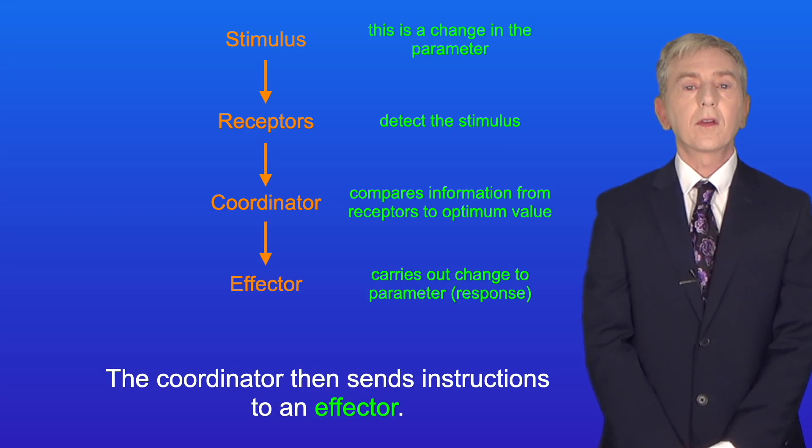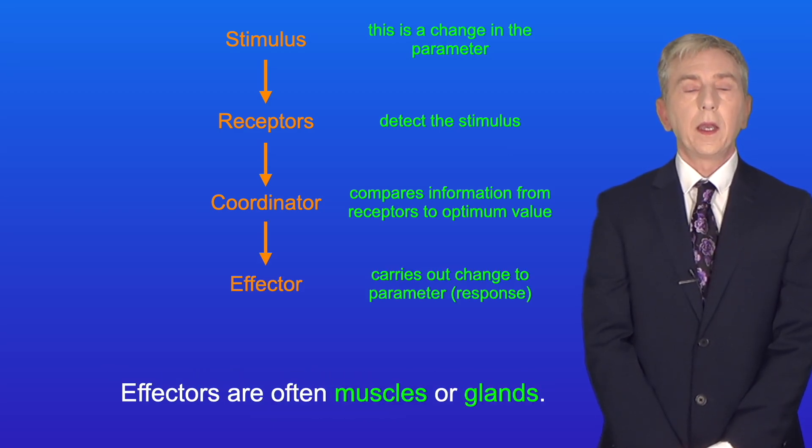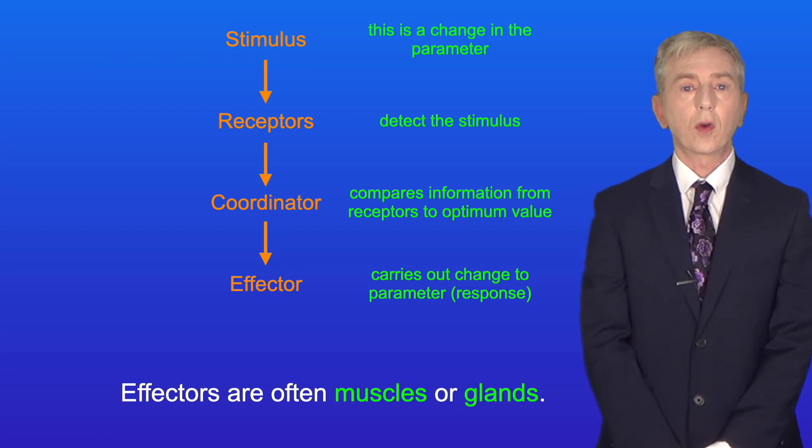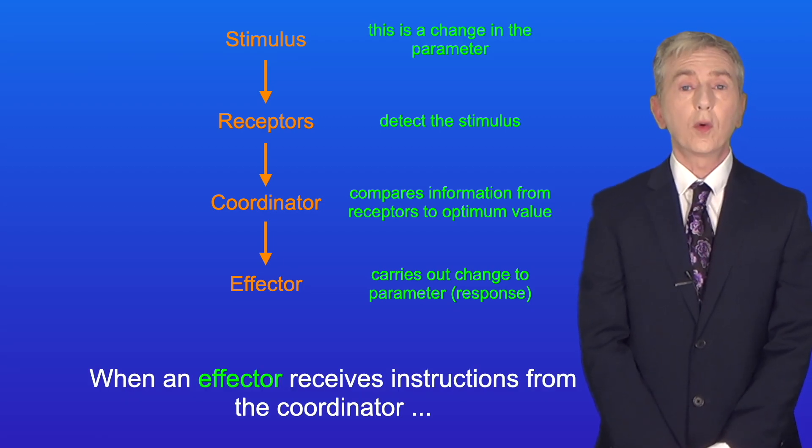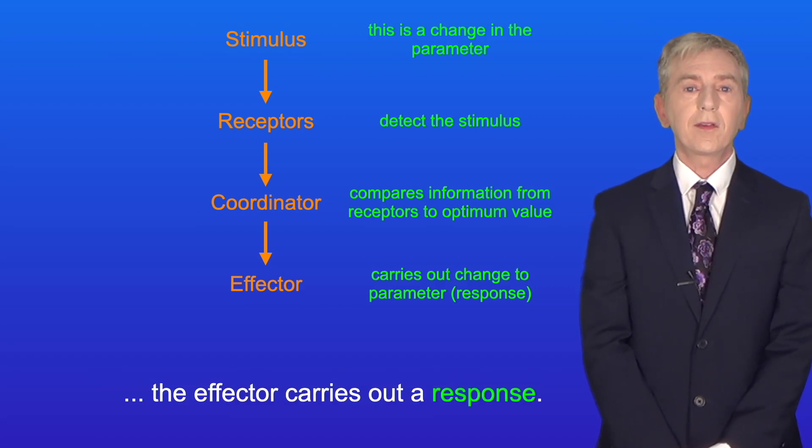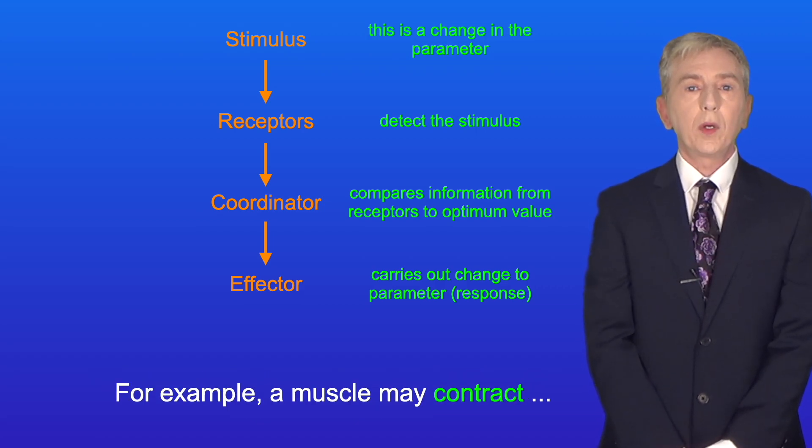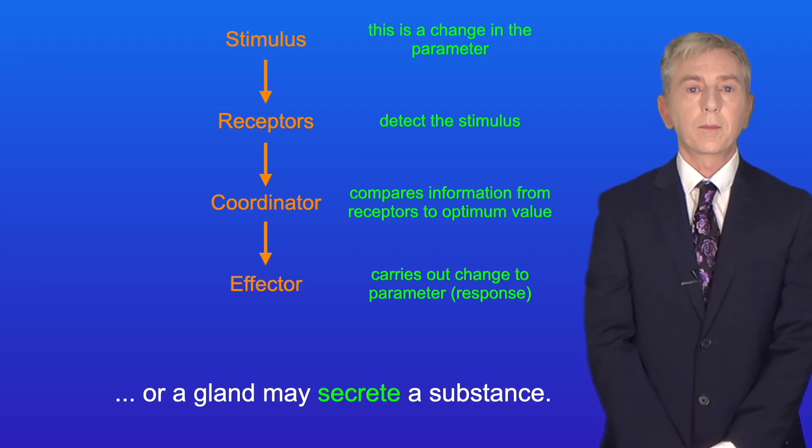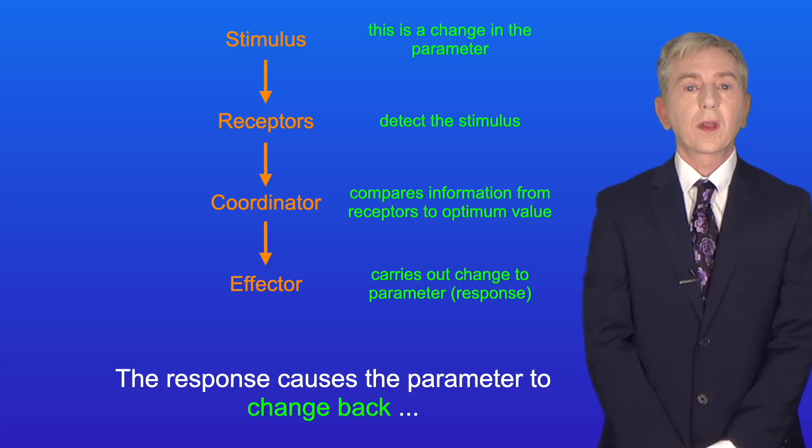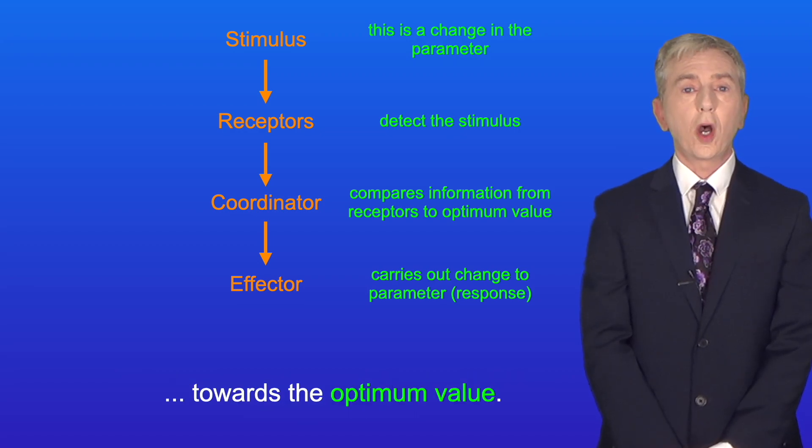The coordinator then sends instructions to an effector. And effectors are often muscles or glands. When an effector receives instructions from the coordinator, the effector carries out a response. For example, a muscle may contract or a gland may secrete a substance. And the response causes the parameter to change back towards the optimum value.